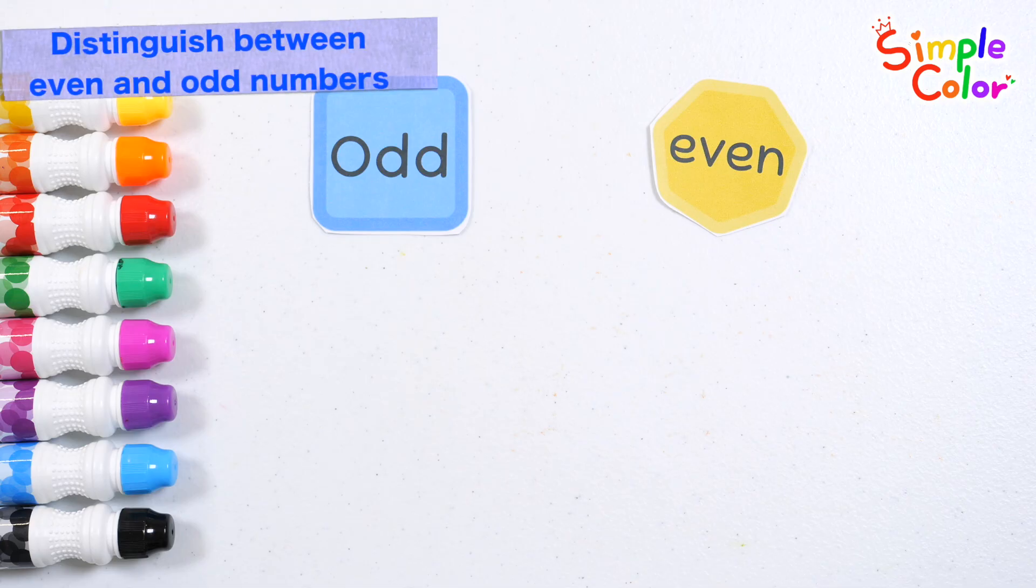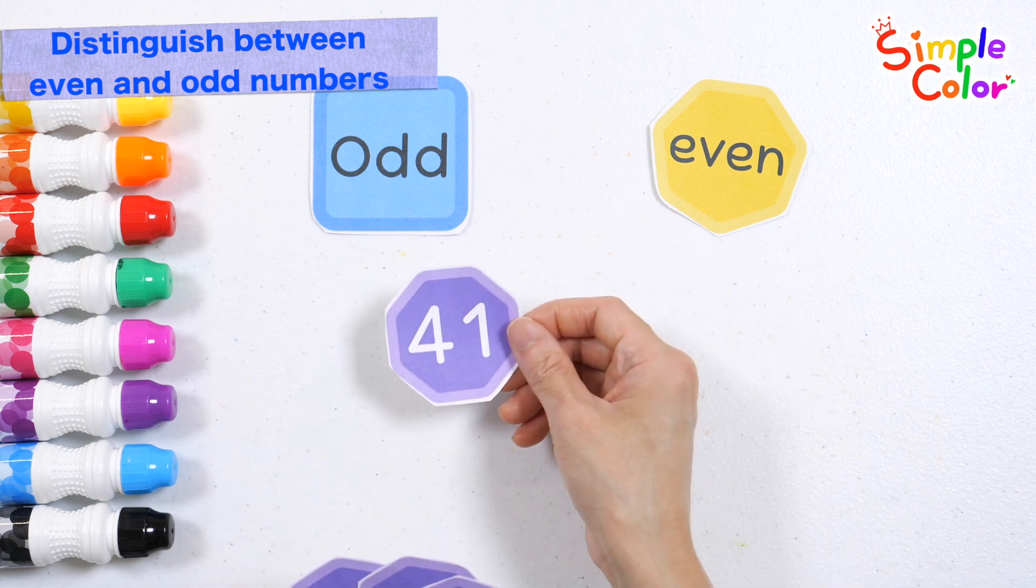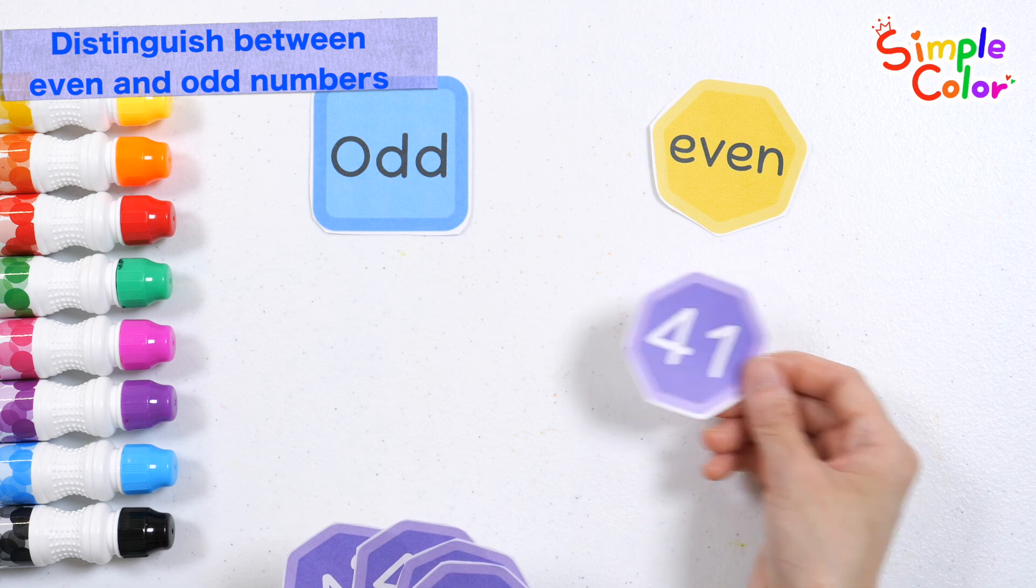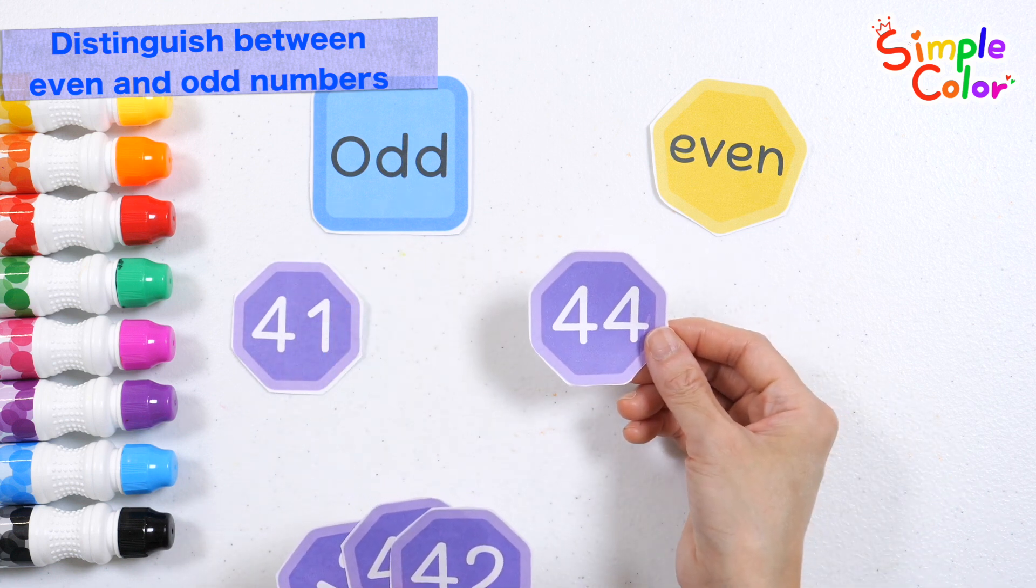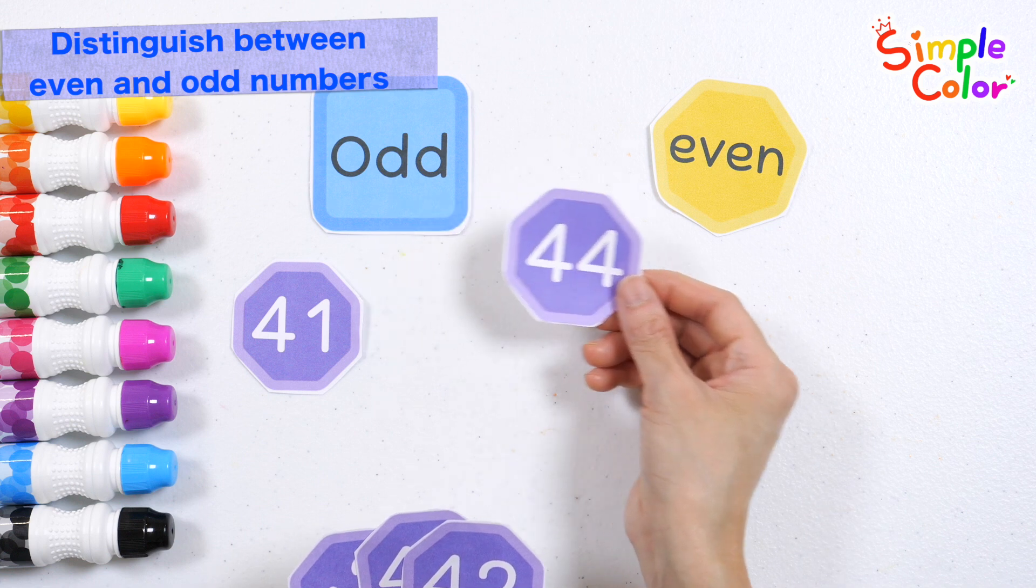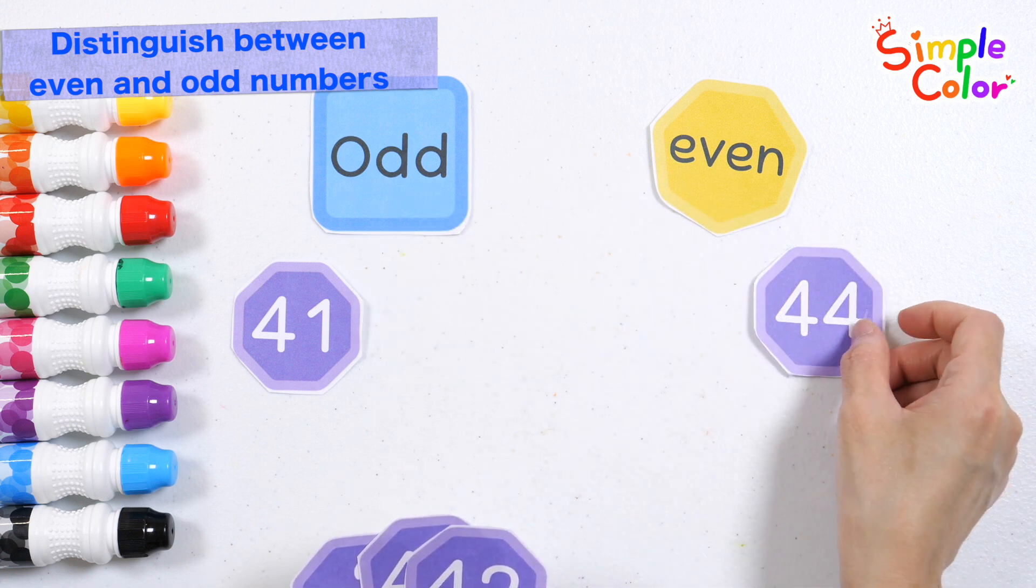Let's read the numbers one by one and separate them into even and odd numbers. 41, is it odd or even? It's odd. 44, is it odd or even? It's an even number.